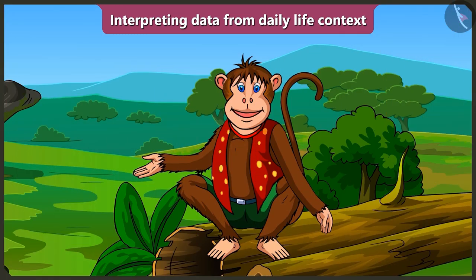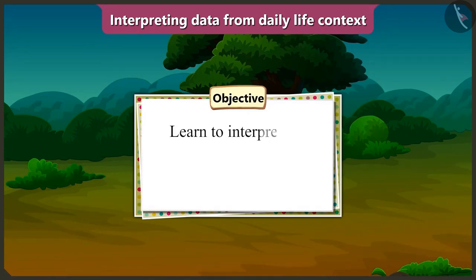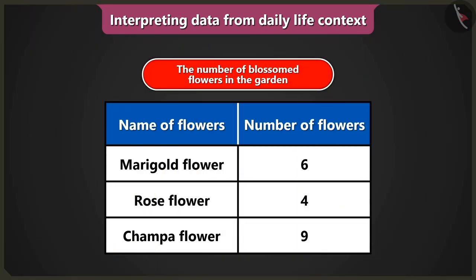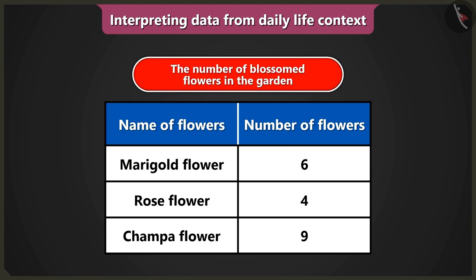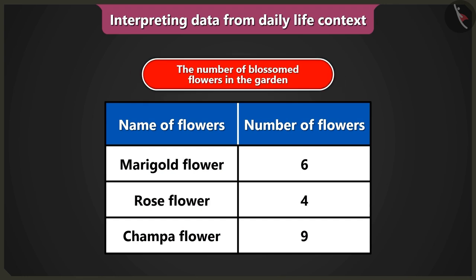Today, in this video, we will learn to interpret data from the table. Look, there are different flowers in this garden. How many flowers have blossomed? That data has been collected and filled in the table. That's why it has been written on the top of the table: the number of blossomed flowers in the garden.